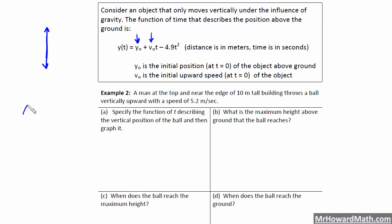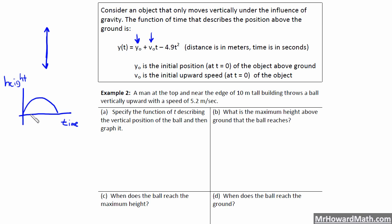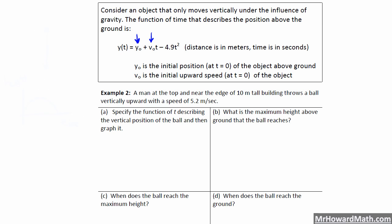Straight back down. We are going to get a parabola out of this, but realize the x-axis is actually time — how long is it above the ground. The vertical axis is the height above the ground. This is not like throwing a football where the x-axis is horizontal distance. The horizontal axis is actually time, so we are throwing the object straight up; it is not being thrown forward at all.